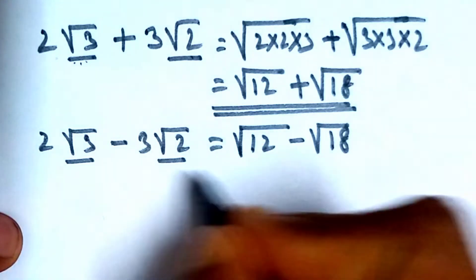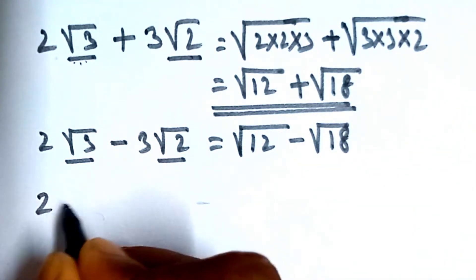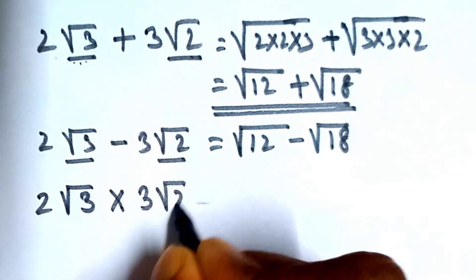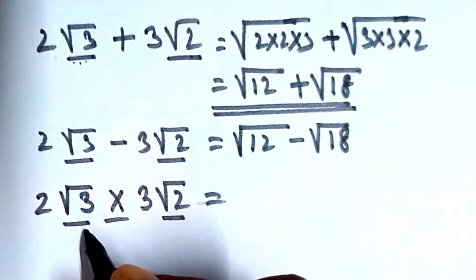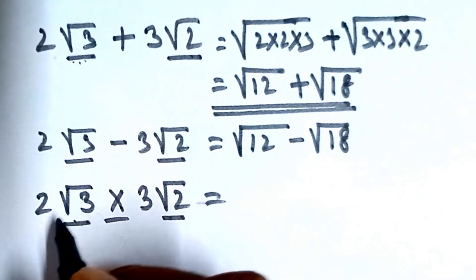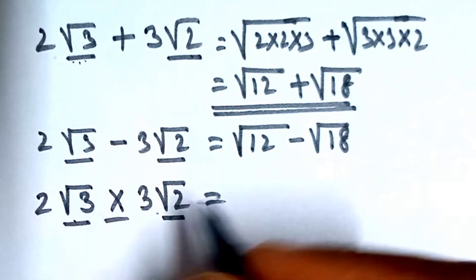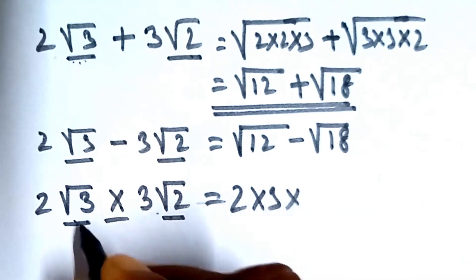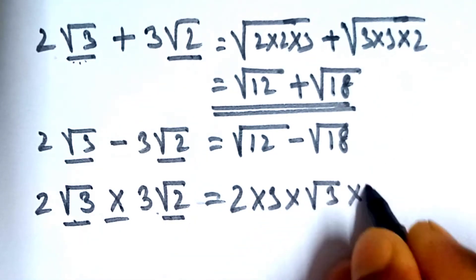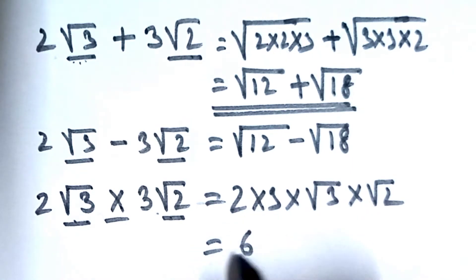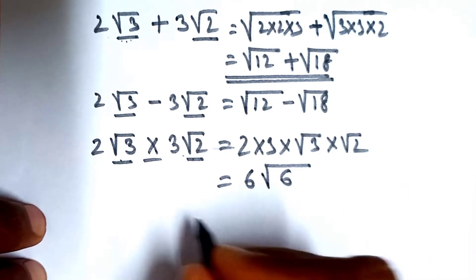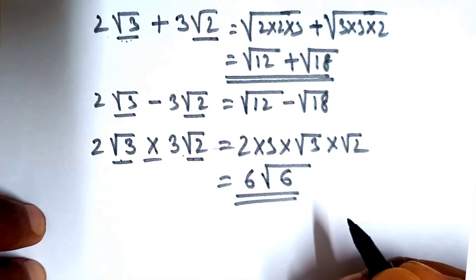Similarly, we can write this. So now there is multiplication. There is no law about whether the terms are the same or not — you can multiply both. So multiply between this: 2 into 3 gives 6, and 2 into 3 gives 6. This is the value.